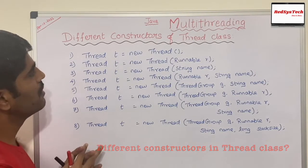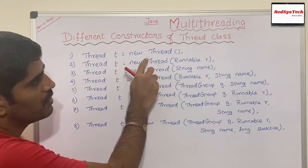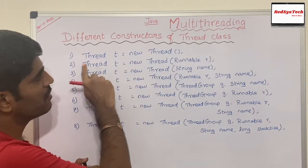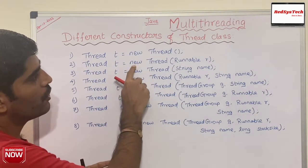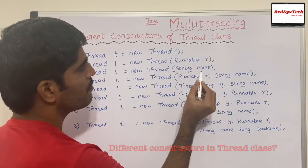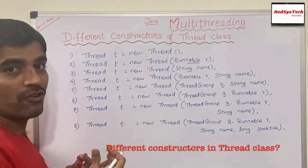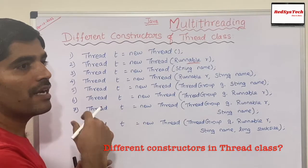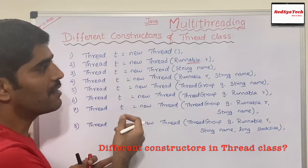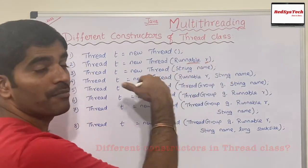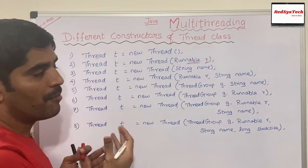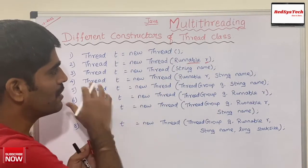The first constructor is Thread t = new Thread() — with no arguments, this is the simplest way of creating a thread. The second way is Thread t = new Thread(Runnable r). This is used when your class implements the Runnable interface. You pass the object of that implemented class here. Since the Runnable interface has no start method, this is the only way to start such a thread.